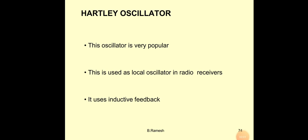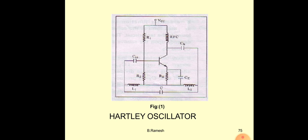This is the Hartley oscillator. The Hartley oscillator uses two inductors in series and parallel with a capacitor. It produces a high frequency signal at a particular frequency. An oscillator converts a DC signal into an AC signal at a particular frequency. This oscillator is very popular and is used as a local oscillator in the radio receiver. It uses inductive feedback.